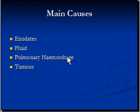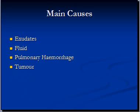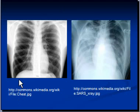A third cause is pulmonary hemorrhage, which means the presence of blood in the alveoli. This can be caused by a number of conditions including carcinoma, pneumonia, pulmonary embolism, tuberculosis, and tumors such as alveolar cell carcinoma.